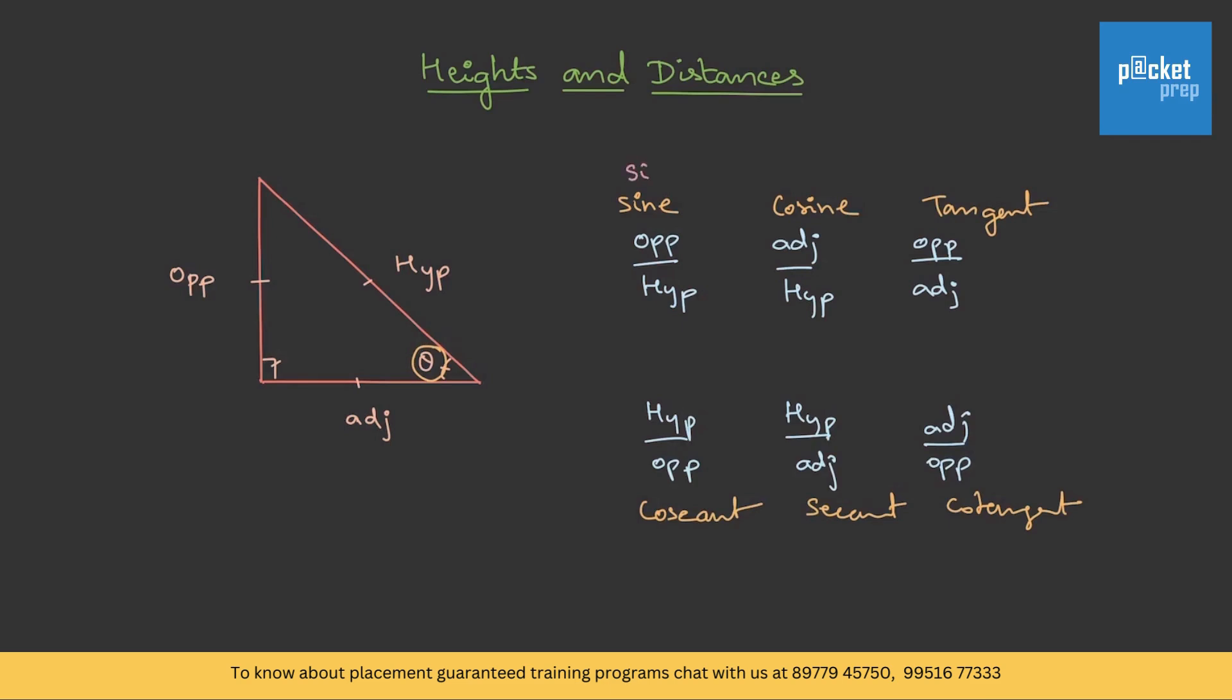This is called sine theta, cos theta, tan theta, cosecant theta, secant theta, cot theta. One very important thing to note: these trigonometric ratios are numbers, not angles.